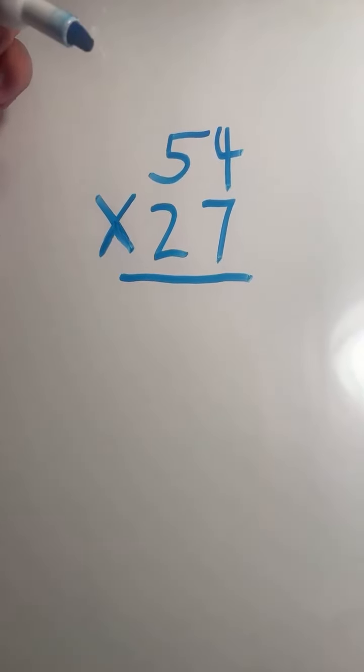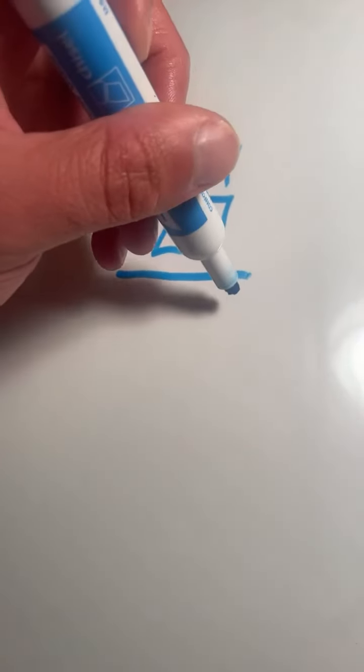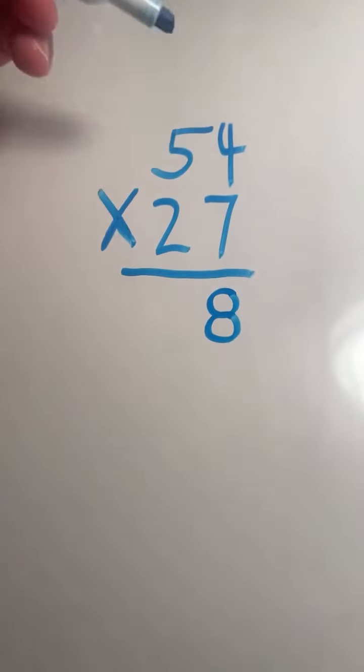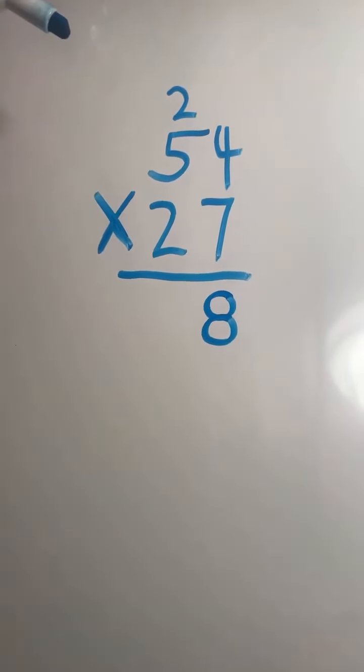Since our product is more than 10, we have to regroup. The 8 in 28 goes in the ones place. The 2 in 28 gets carried over to the tens place.